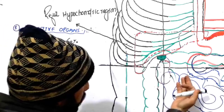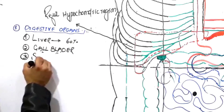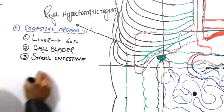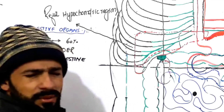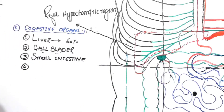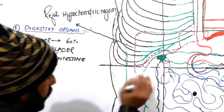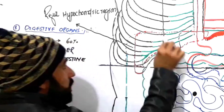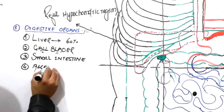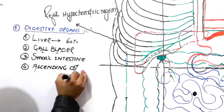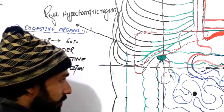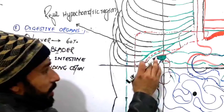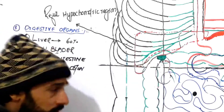Some parts of the small intestine will also be found in the right hypochondric region — not all parts, just very little parts. Additionally, looking at the diagram, here is the cecum and the ascending colon. Some parts of the ascending colon are also in the right hypochondric region — specifically the distal or last part of the ascending colon.